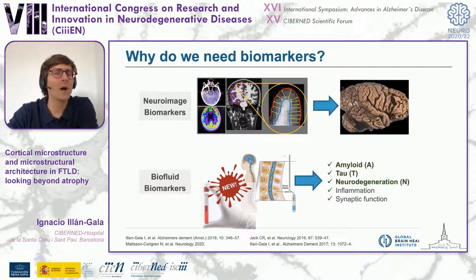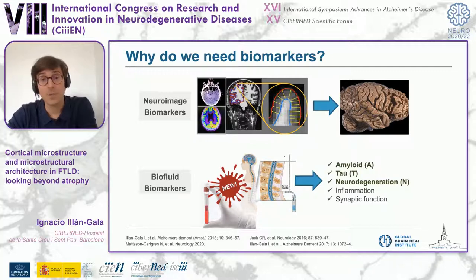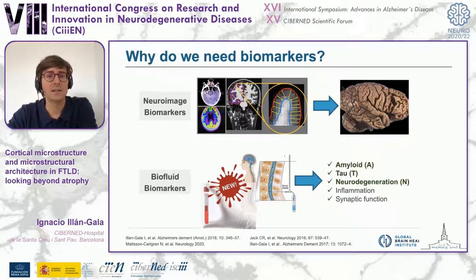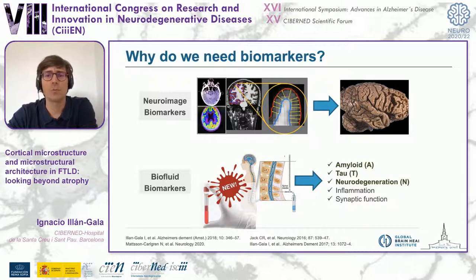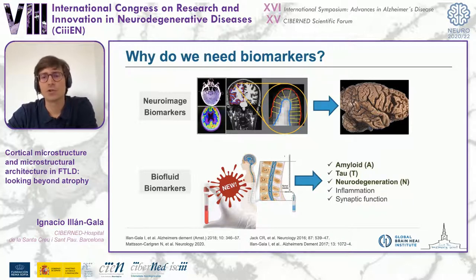Why do we need biomarkers? Biomarkers may be useful to increase the certainty of a clinical diagnosis by detecting changes like atrophy or hypometabolism. But these changes relate to the topography of disease and not to the etiology. That's why structural MRI is considered a topographic biomarker.